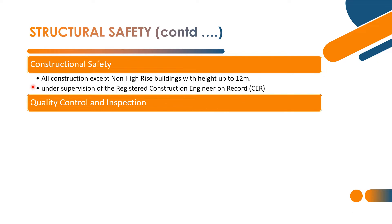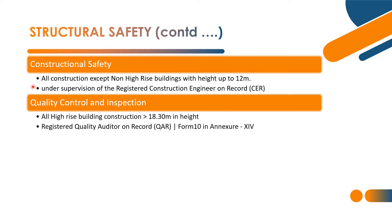Next is quality control and inspection. This will be done for all high-rise building construction — a high-rise building is when the height of the building is more than 18.3 meters. This will be done by the registered Quality Auditor on Record. The relevant template is Form 10, like Annexure 14, Form 10 — quality control and inspection order templates.